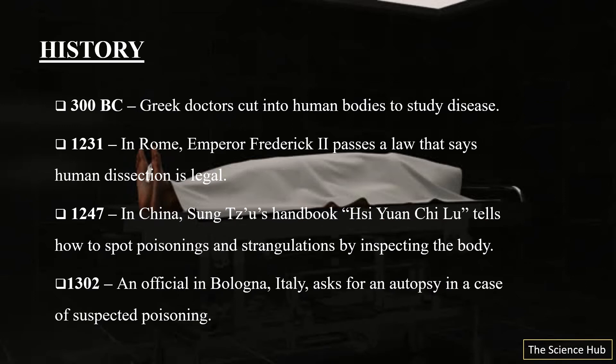Now the history of autopsy. In 300 BC, Greek doctors cut into human bodies to study diseases. In 1231 in Rome, Emperor Frederick II passed a law stating that human dissection is legal. In 1247 in China, Sun Tzu's handbook 'Xiyuan Jilu' describes how to spot poisonings and strangulations by inspecting the body. Then in 1302, an official in Bologna, Italy ordered an autopsy in a case of suspected poisoning.